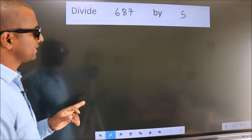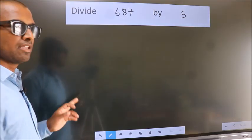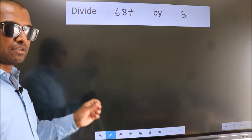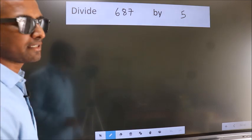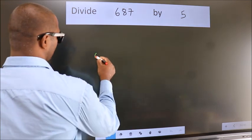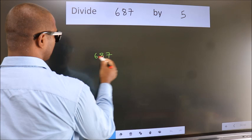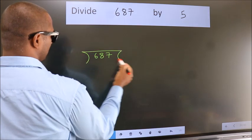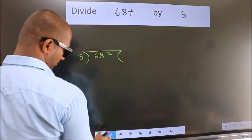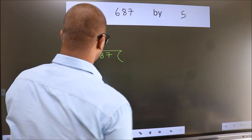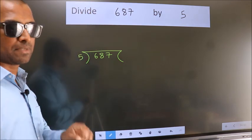Divide 687 by 5. To do this division, we should frame it in this way. 687 here, 5 here. This is your step 1.